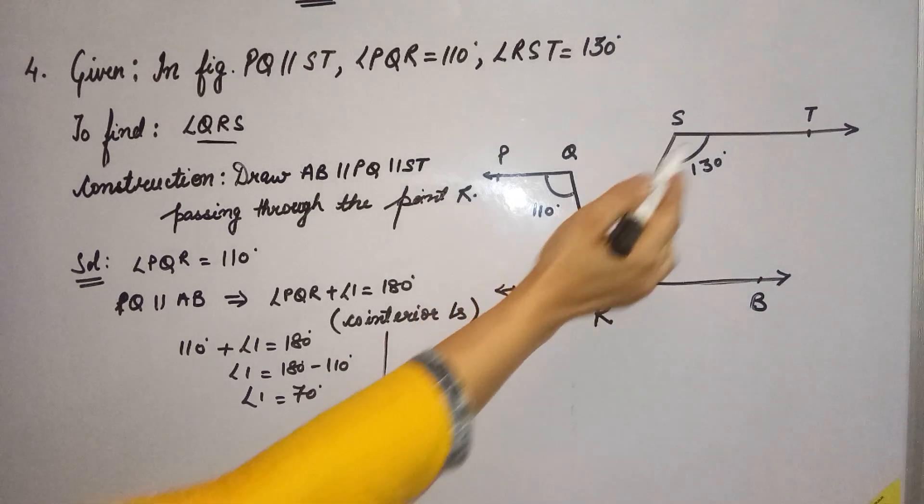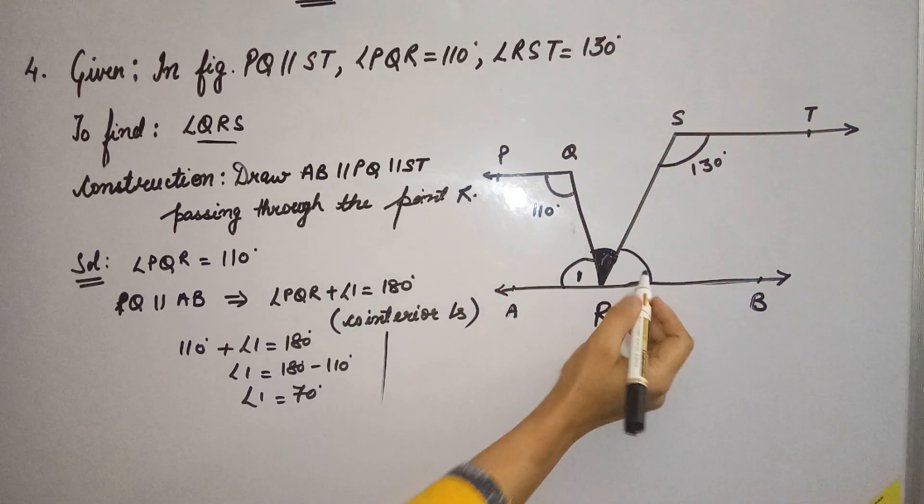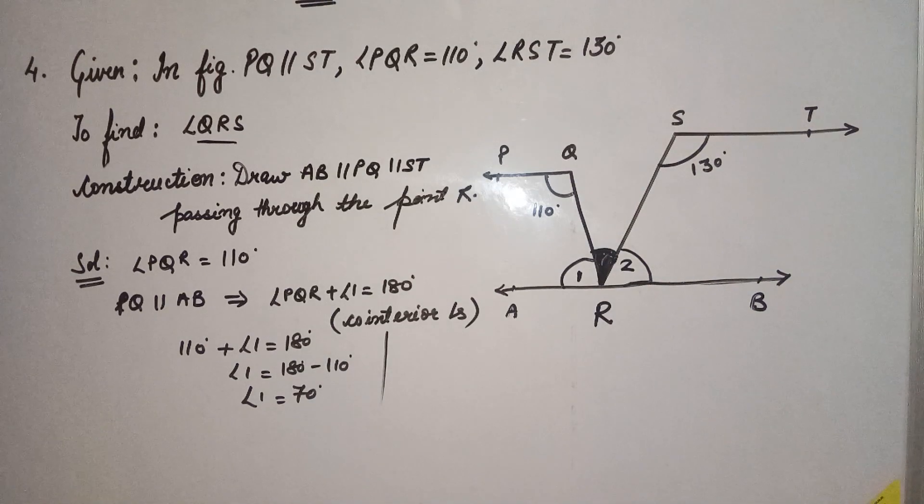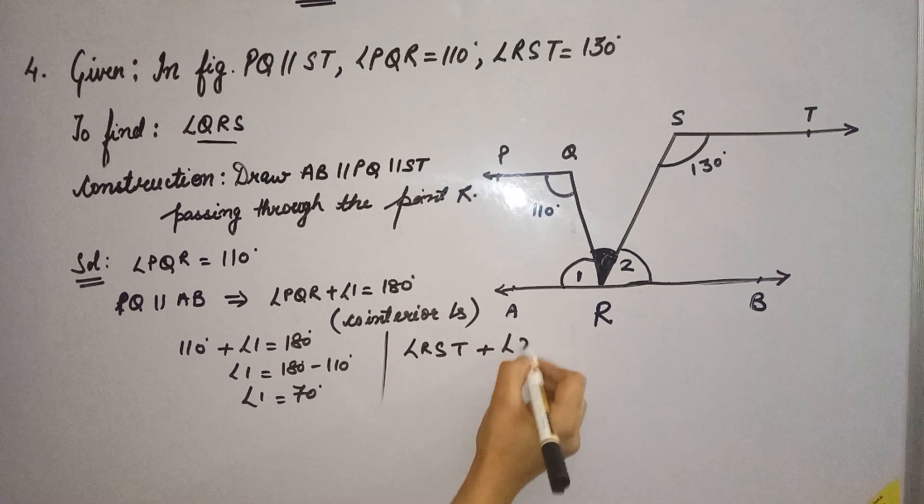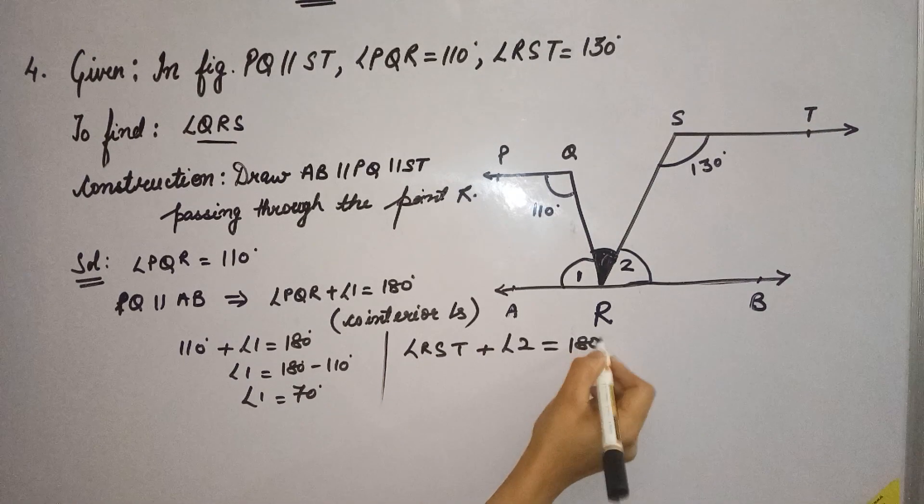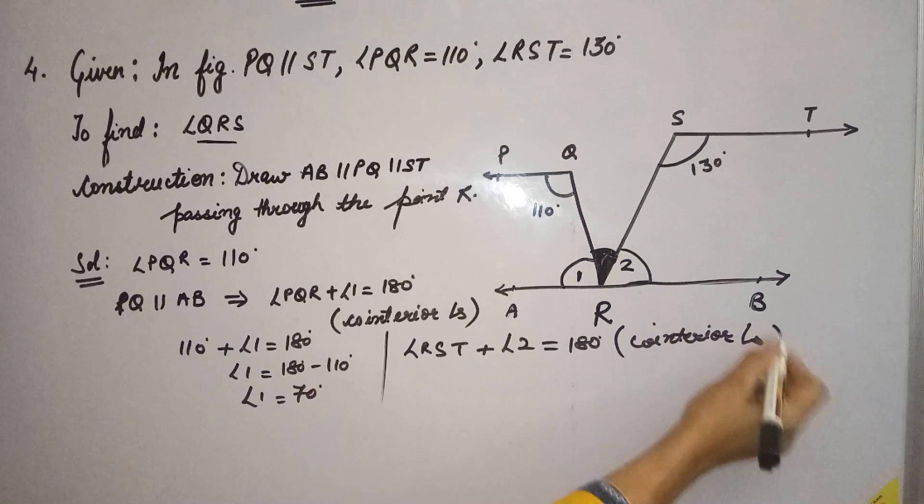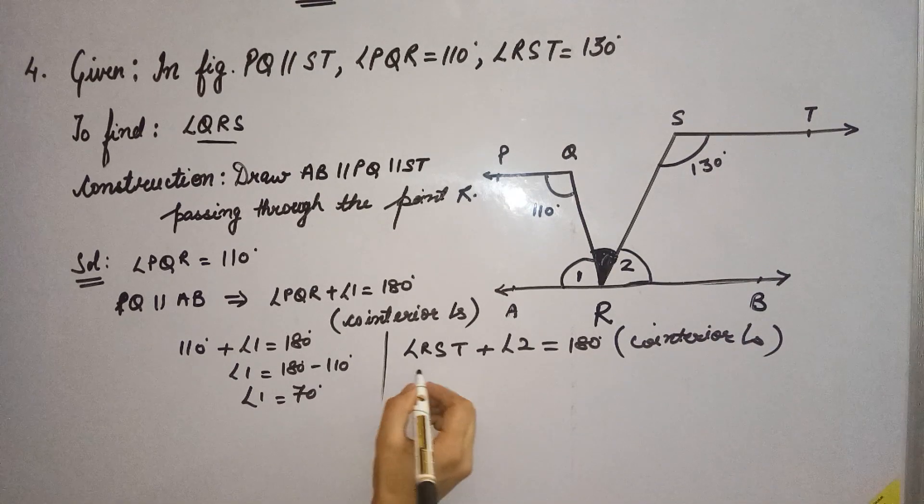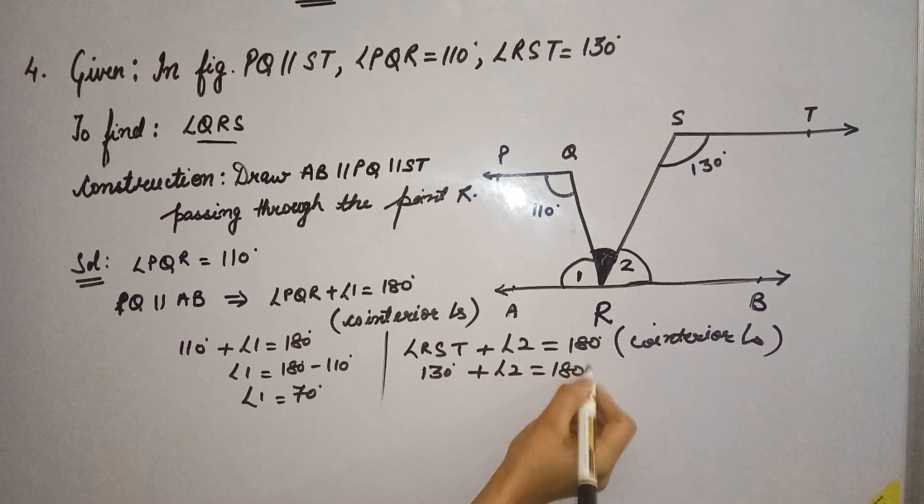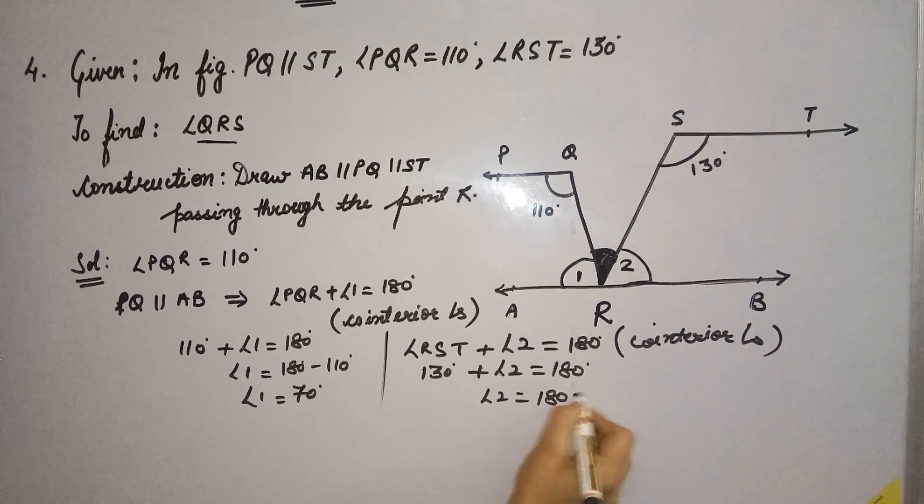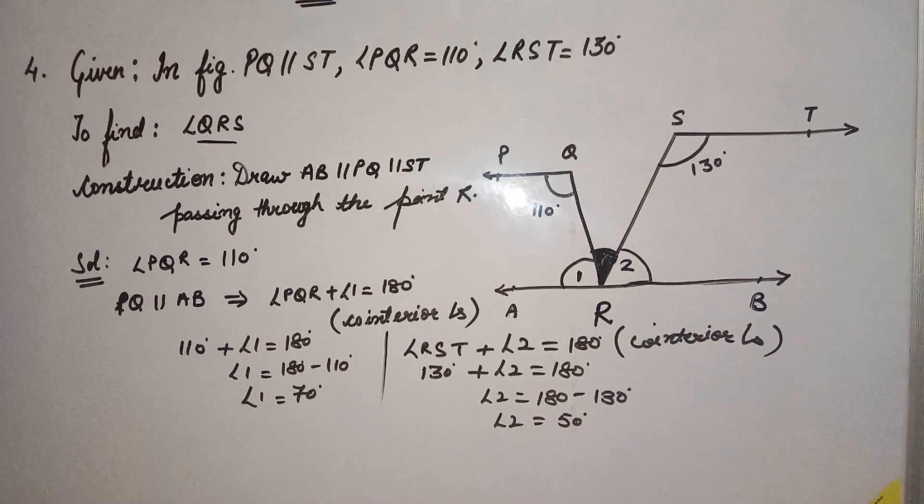Similarly, ST is parallel to AB, so angle 2 and angle RST will become co-interior angles. So angle RST plus angle 2 is equal to 180 degrees due to co-interior angles. RST is 130 degrees. We can calculate angle 2. So angle 2 equals 180 minus 130, which is 50 degrees.